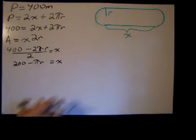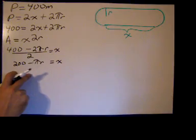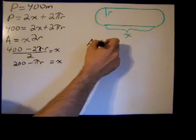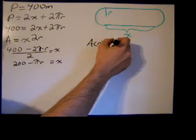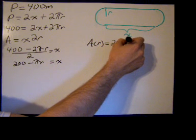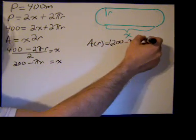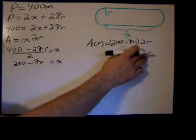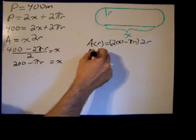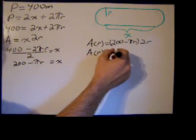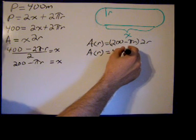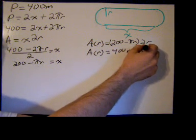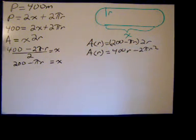Now we have a formula for the area in terms of r, so one variable, so we can write that A of r equals x which is now 200 minus pi r times 2r. Go ahead and multiply that out. I don't want to have to use the product rule when we take the derivative. 2r times 200 is 400r, 2r times negative pi r is minus 2 pi r squared.